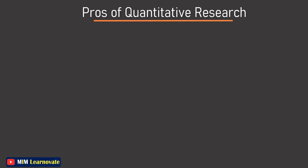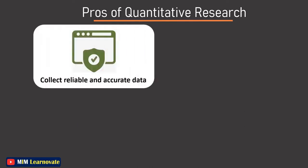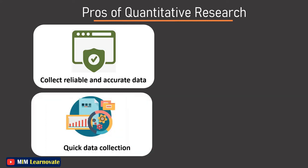Pros of quantitative research. First, collect reliable and accurate data. As data is collected, analyzed, and presented in numbers, the results obtained will be extremely reliable. Numbers do not lie — they offer an honest picture of the research without discrepancies and are extremely accurate. Second, quick data collection: quantitative research is carried out with a group of respondents representing a population, and the involvement of statistics makes conducting and analyzing results straightforward and less time-consuming.